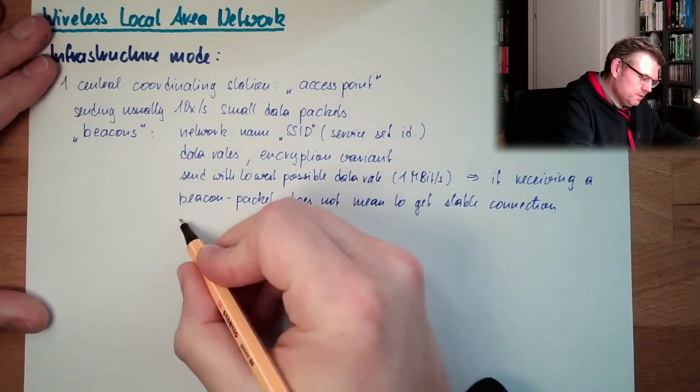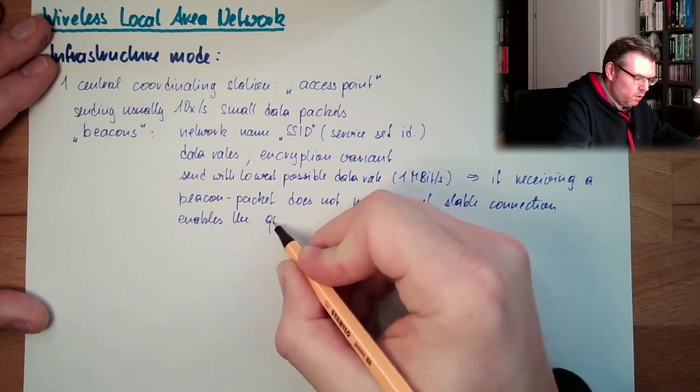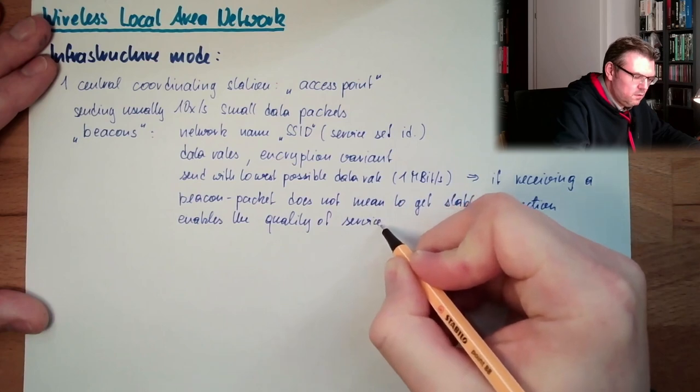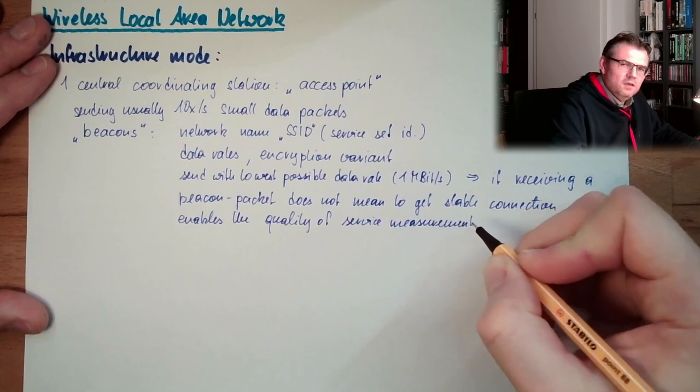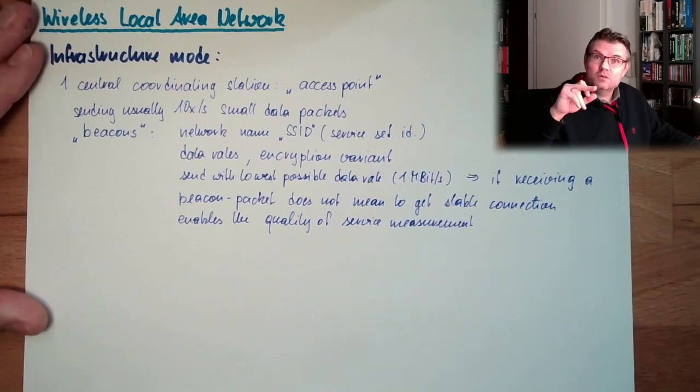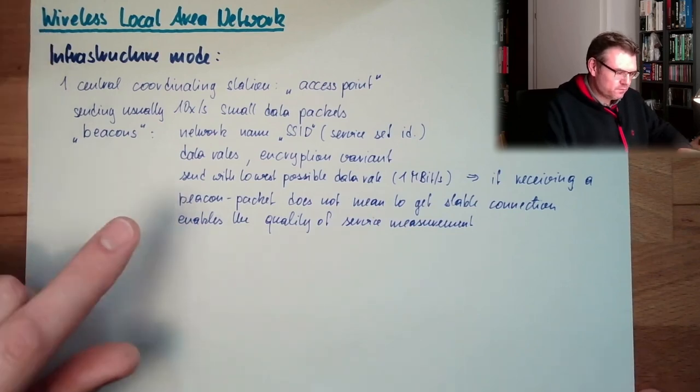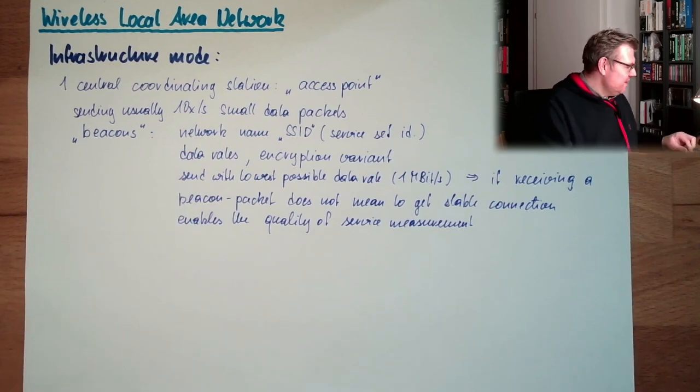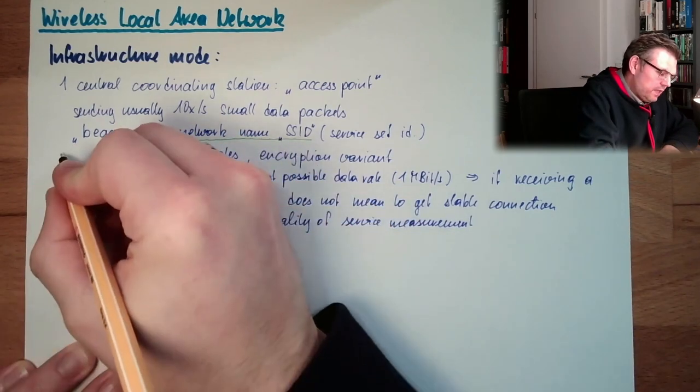So those lines usually where you see, oh I have good reception, not that good reception. This is done with the help of the beacons. Network name, the SSID, the broadcast of the SSID. This can usually be turned off.